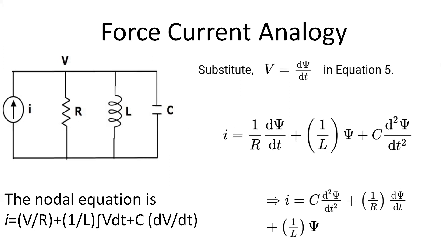Now if we see the force current analogy, the mathematical equations of the translational mechanical system are compared with the nodal equations of the electrical system. The circuit consists of a current source, resistor, inductor, and capacitor, all connected in parallel. The nodal equation is i equals v/R plus (1/L)·∫v dt plus C·dv/dt. Substituting v equals dψ/dt, we get i equals C·d²ψ/dt² plus (1/R)·dψ/dt plus (1/L)·ψ.